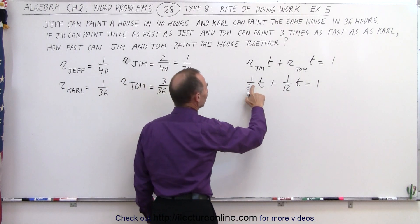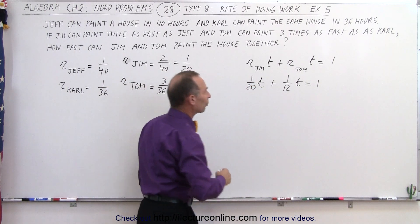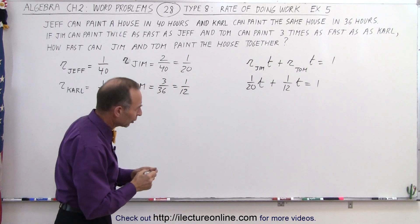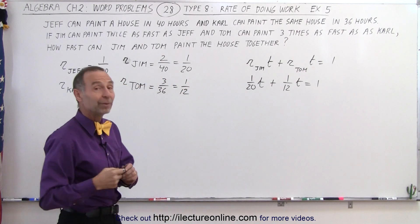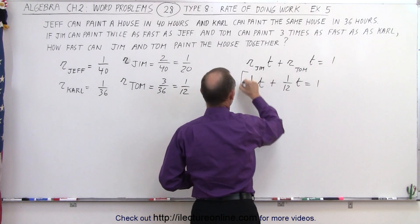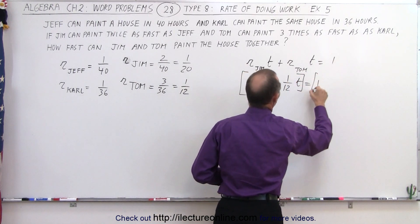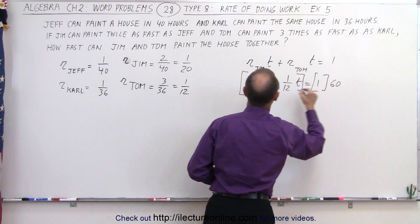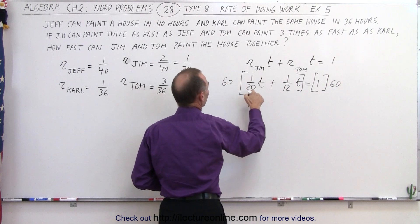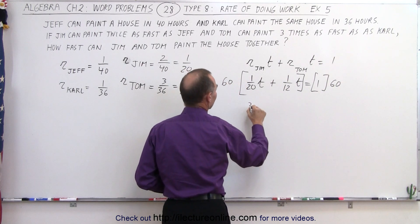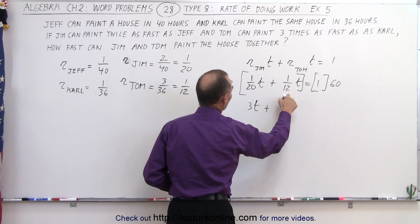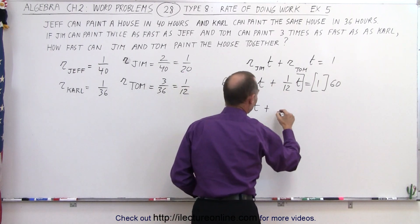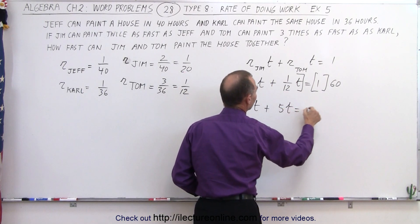Now we have to establish what t is equal to by getting rid of those denominators. The lowest common denominator, I believe, would be 60. So I'm going to multiply the left side and the right side by 60. So 20 goes into 60 three times, so I get 3t plus 12 goes into 60 five times, so plus 5t is equal to 60.